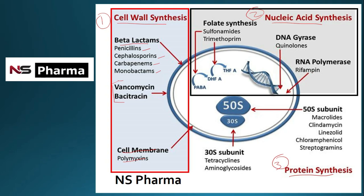Polymyxin causes cell membrane leakage, also related to cell wall synthesis inhibition. Under nucleic acid synthesis inhibitors, the first category is folate synthesis inhibitors — sulfonamides and trimethoprim. Sulfonamides inhibit the conversion of PABA (para-aminobenzoic acid) into DHFA (dihydrofolic acid).